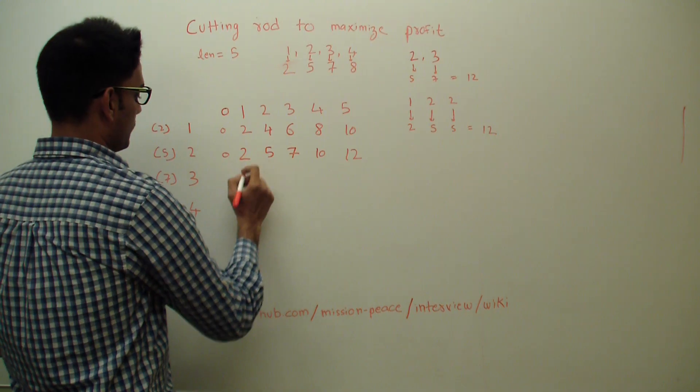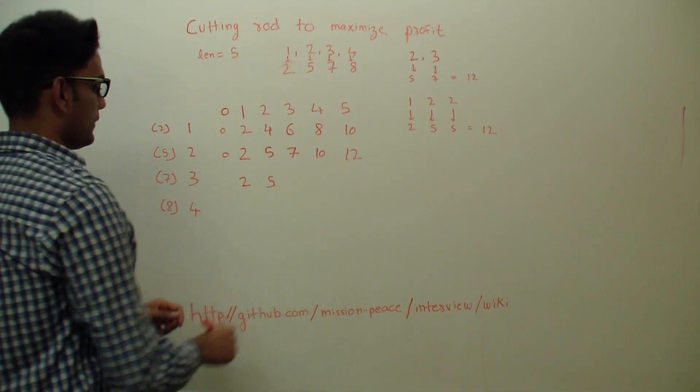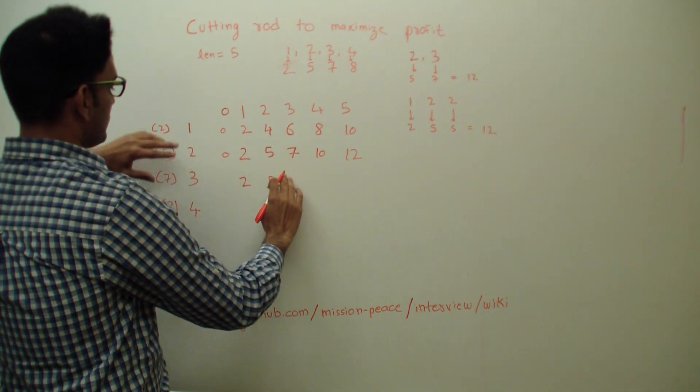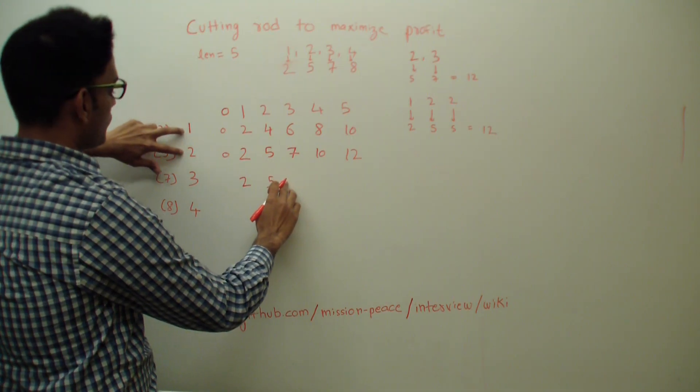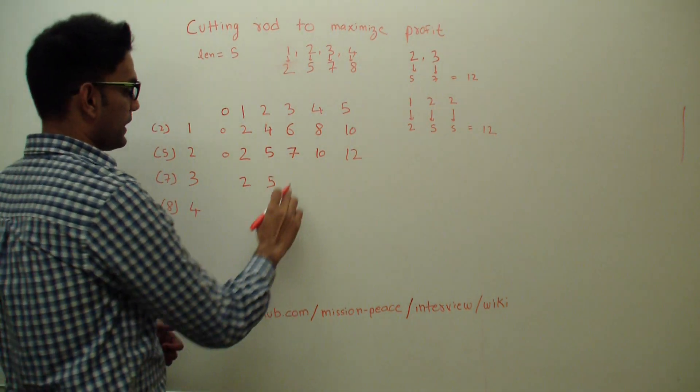So three is not going to play any role, so two will come as it is, five will come as it is. Let's look at here. So if three did not exist, and if we could cut it to one and two lengths and the total length was three, the maximum profit I expected to make is seven.